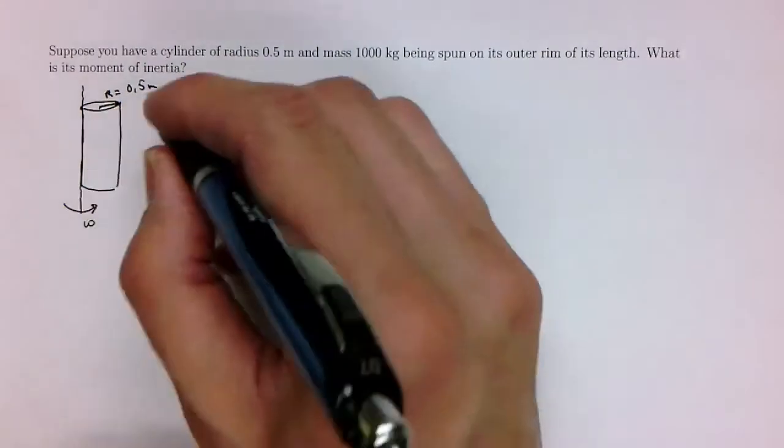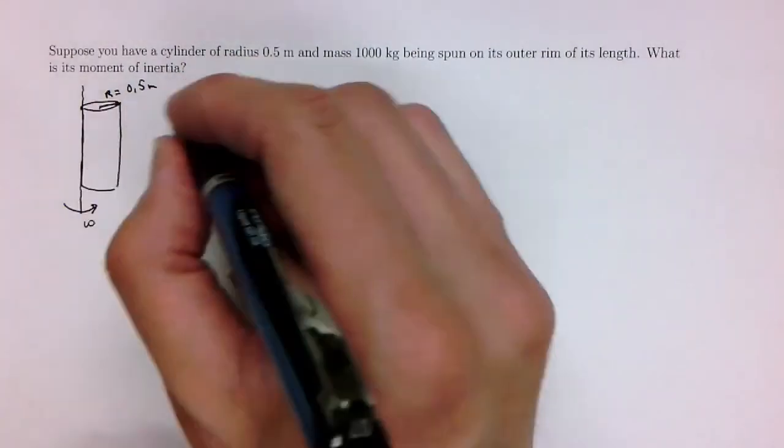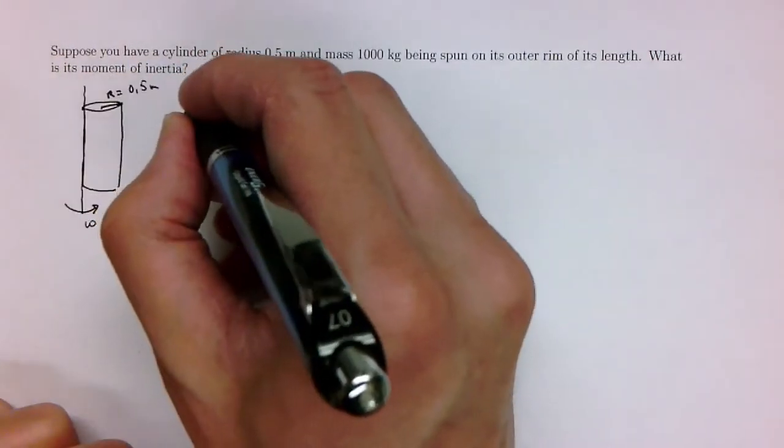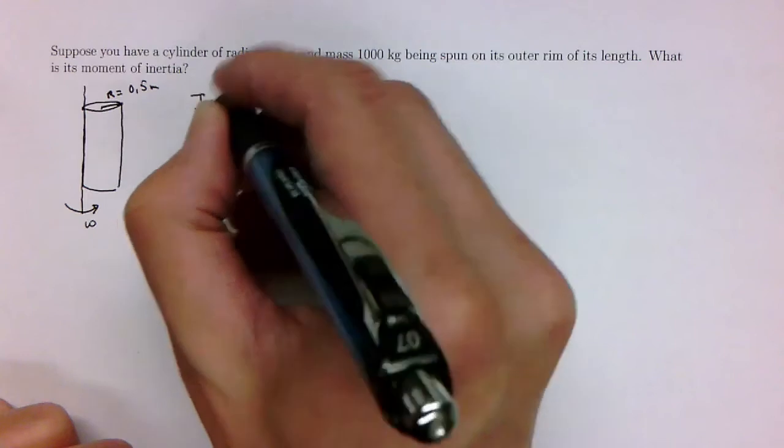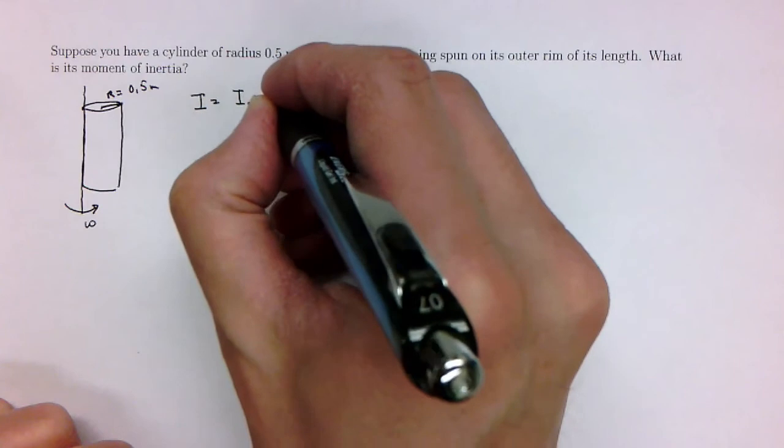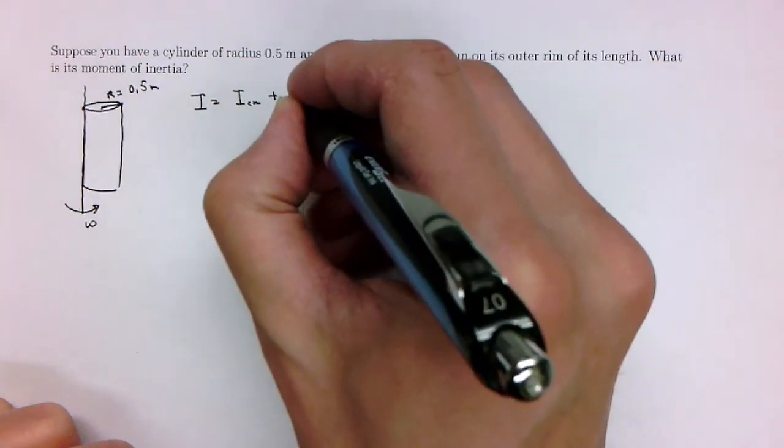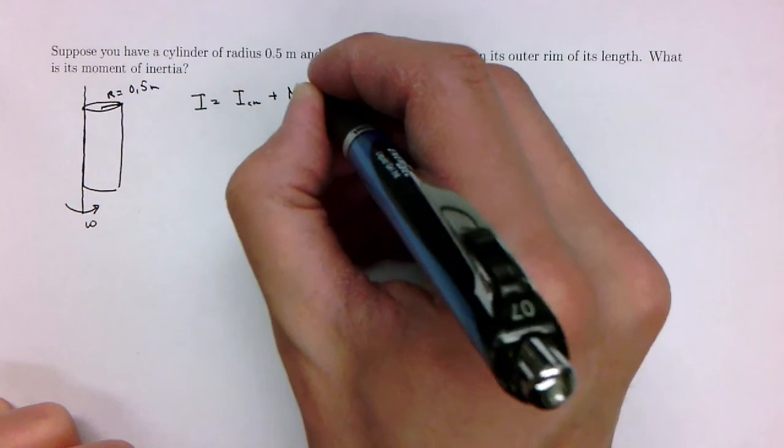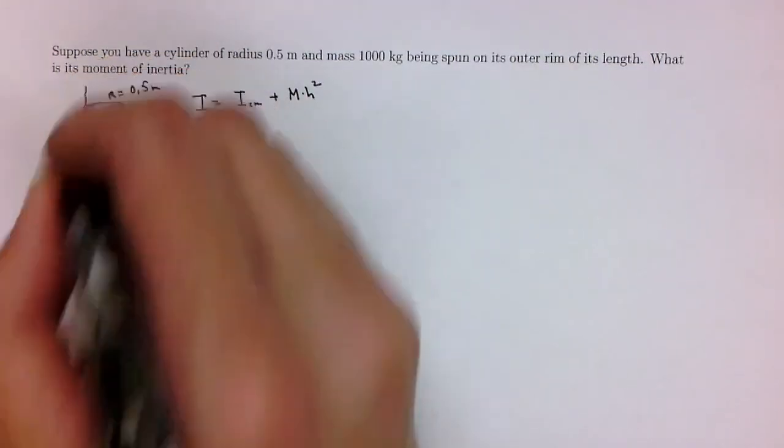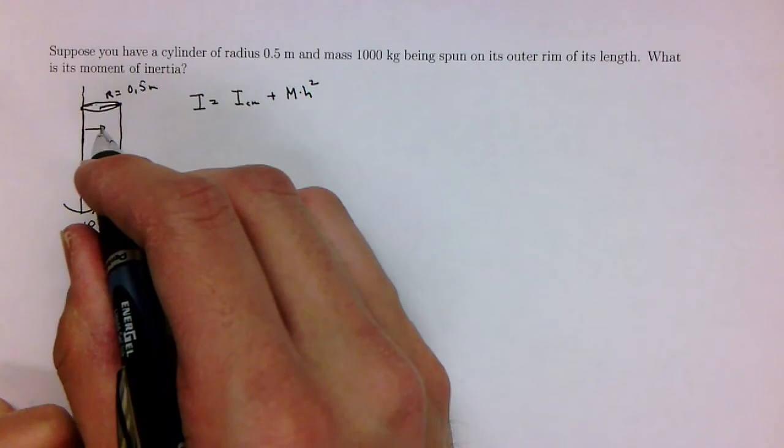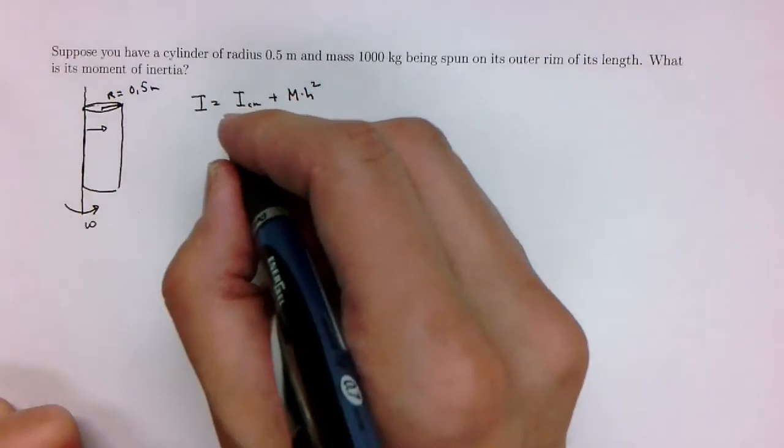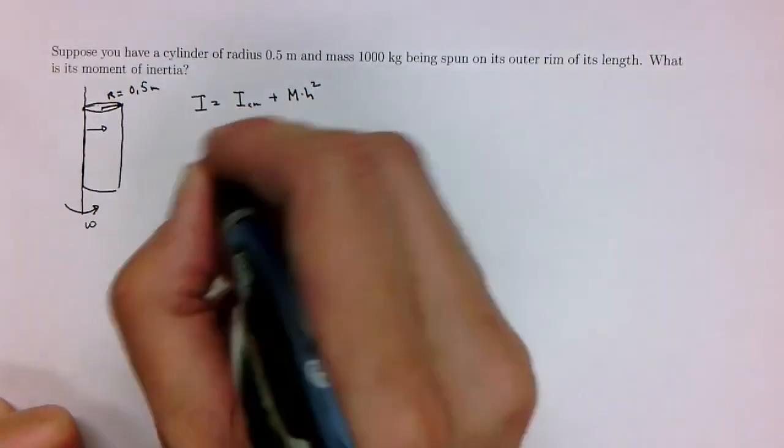So let's calculate the moment of inertia. Recall that the parallel axis theorem says that the moment of inertia of anybody is equal to the moment of inertia of the center of mass plus the mass of the object times h squared, where h is the separation from the center of mass to the rotation axis. So we need to calculate the moment of inertia of the center of mass.